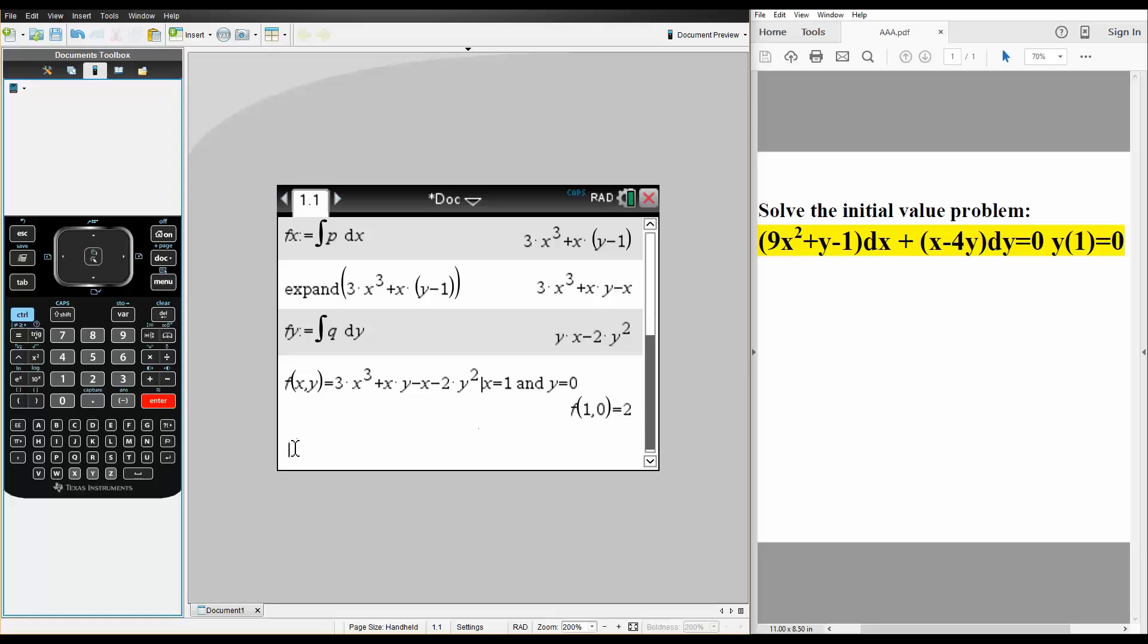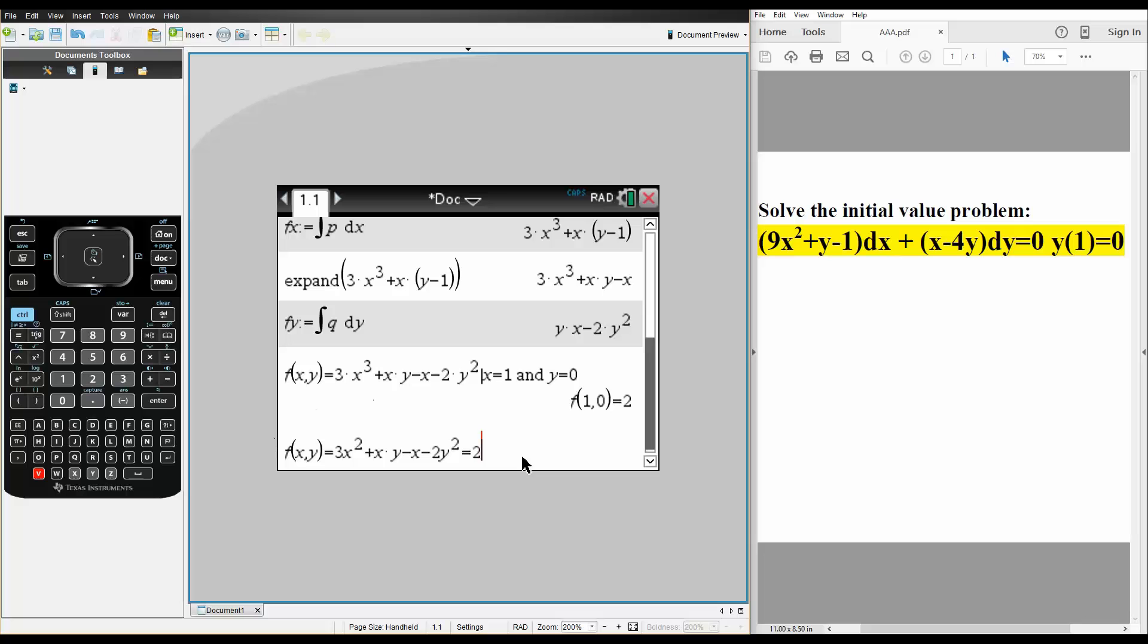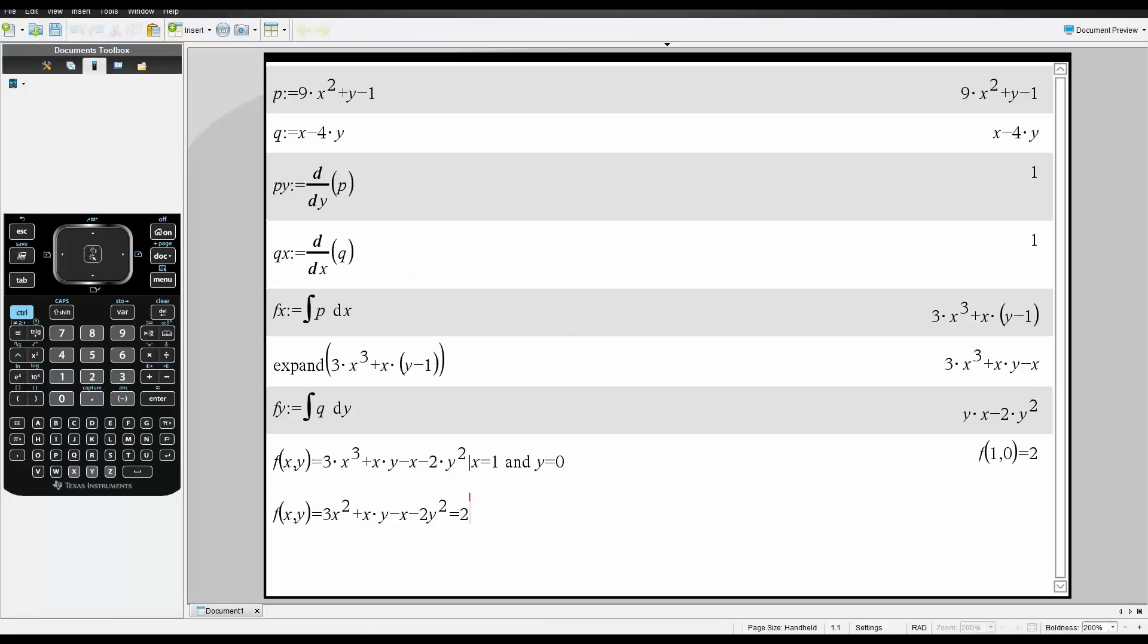And so, this is our final answer. We're saying that 3x³ + xy - x - 2y² = 2. And that is the answer that we write down. And I'm just going to expand it in case you missed a step or something. So, if you missed a step or anything, you can write it down now. But that's all we need to do to solve this question using the TI Inspire.